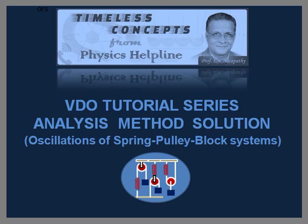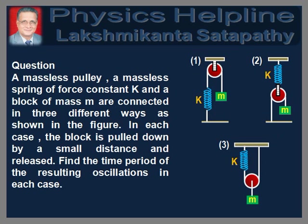In this video tutorial, we will discuss a problem on the oscillations of a spring-pulley-block system. The question is as follows: A massless pulley, a massless spring of force constant K, and a block of mass M are connected in three different ways as shown in the figure. In each case, the block is pulled down by a small distance and released. Find the time period of the resulting oscillations in each case.